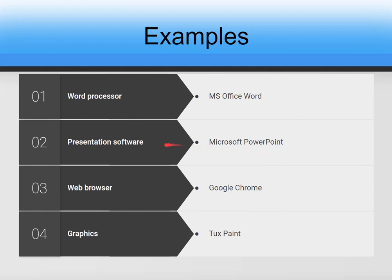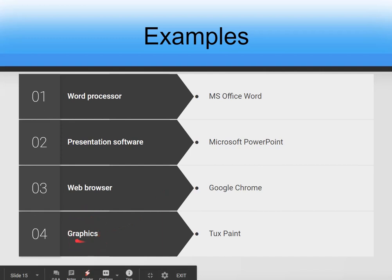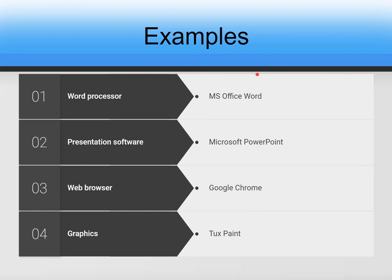If you need to send an email, you connect to the internet using a web browser — one common web browser we all use is Google Chrome. If you need to make a picture or drawing on the computer, you use graphics software — one basic example is MS Paint. These are the various examples of application software; just keep in mind that they perform a specific type of task.